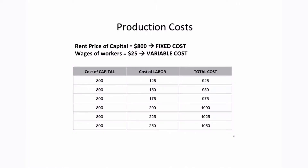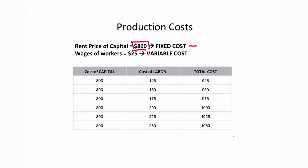Now, how can we determine production costs? We have to see how much the firm is paying for its machines and how much it is paying its workers. Let's assume that the rental price of capital is $800. Because capital is not changing regardless of how much we are producing, this is considered a fixed cost — the cost does not change depending on how much we produce, so it stays constant regardless of the quantity produced.